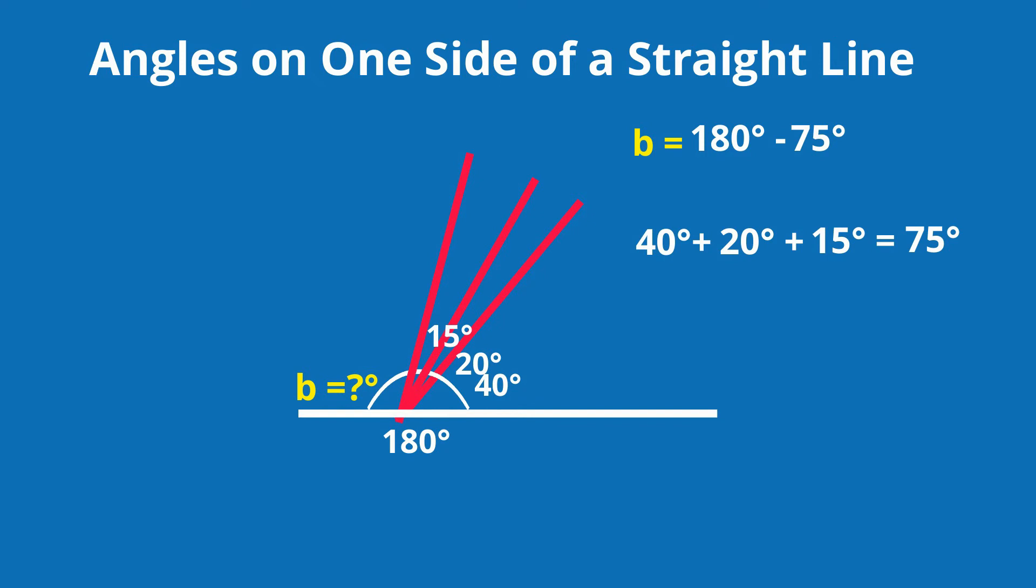So angle B equals 180 minus 75, which is 105 degrees.